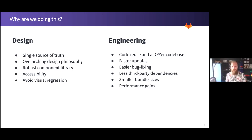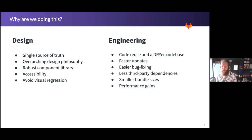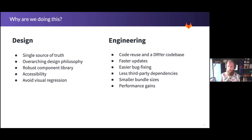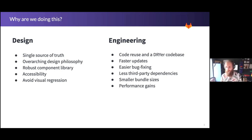On the engineering side, it's very similar. We want to increase code reuse and have a drier code base — one component that we develop and use all over the place, so that when that component changes, it changes everywhere. When we need to update things, we update once. When we fix a bug, we fix it in one place. And it helps us build things a lot quicker — we can just throw in the GitLab button, the GitLab modal, whatever we need.